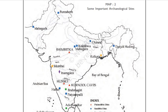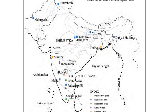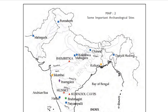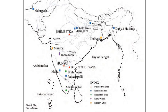There are three main sites where hunter and gatherers have been found. Hunski is in Karnataka, near the Krishna River. Bhimbetka is in Madhya Pradesh, near the Narmada River. Kurnool Caves is in Andhra Pradesh, also near the Krishna River.